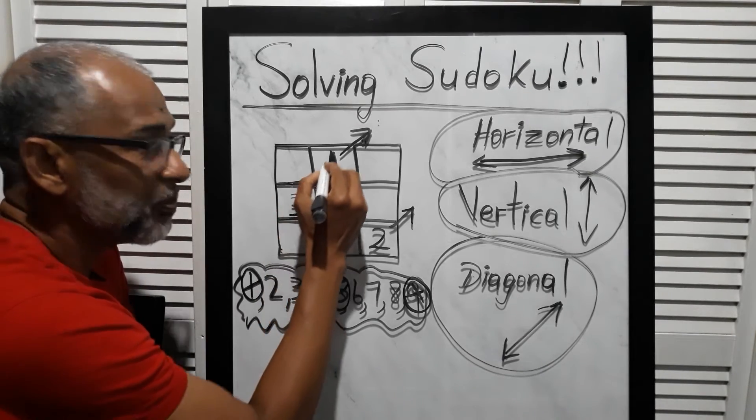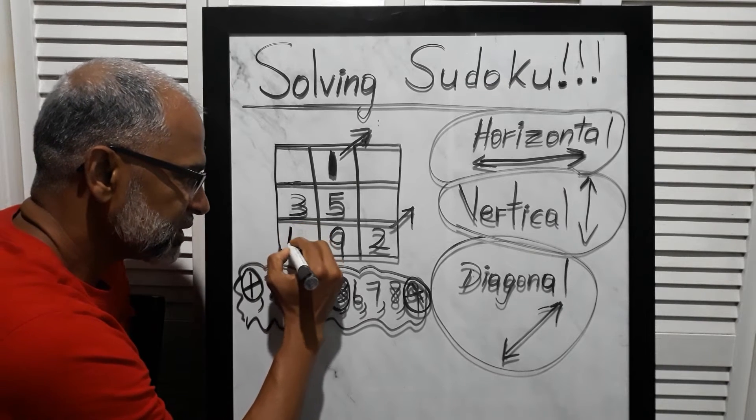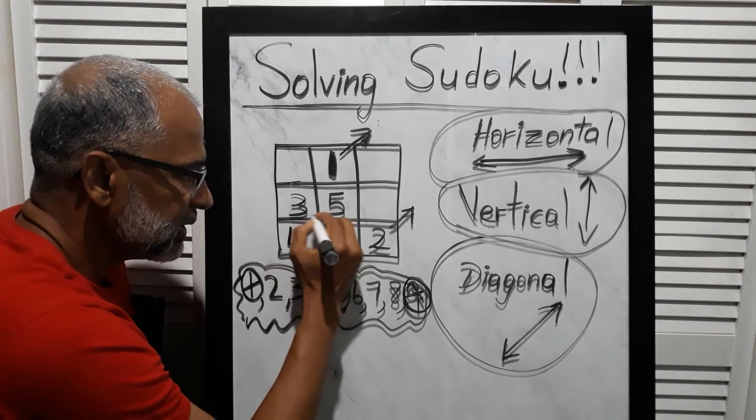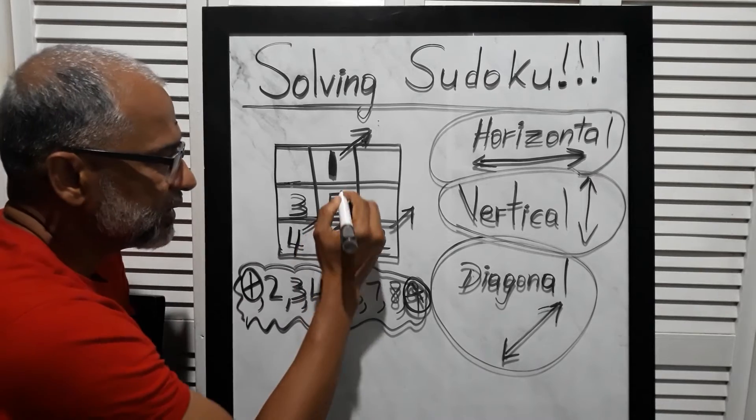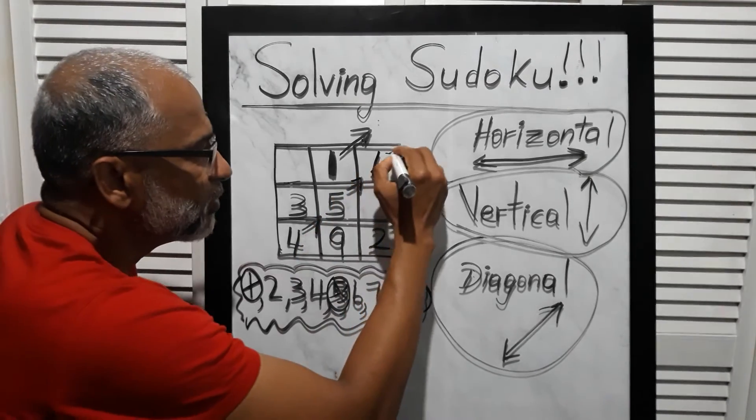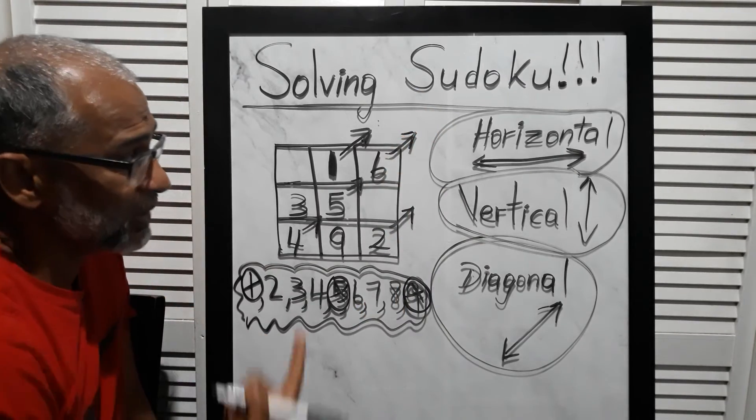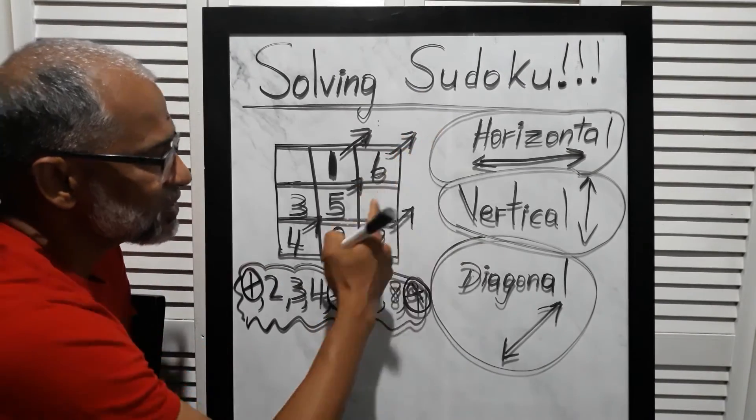We can't go up because there's a number there already, so we move down. The next number is four. Then diagonally, the next number is five. Then the next move is gonna be six.